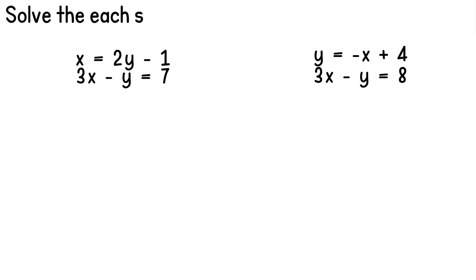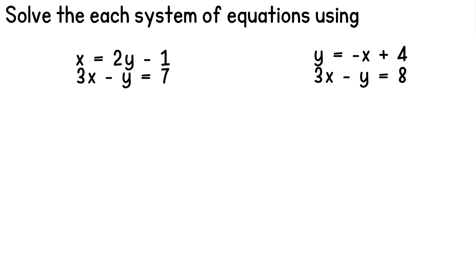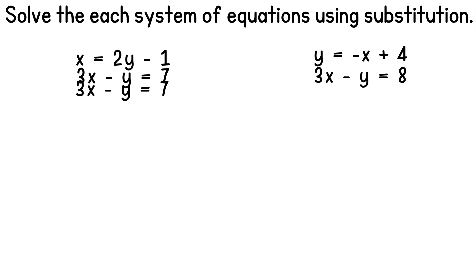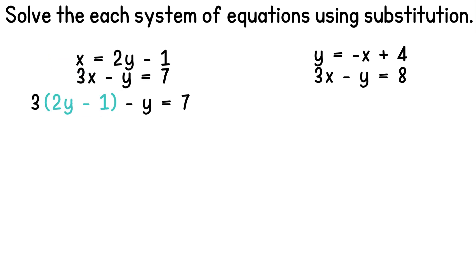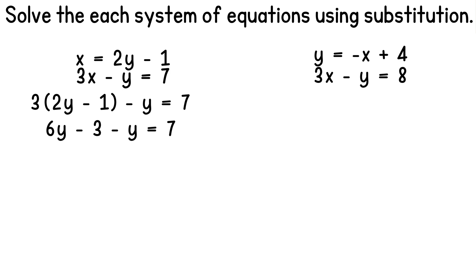We'll solve each system using the substitution method again. We'll start with x equals 2y minus 1 and 3x minus y equals 7. We can see that the first equation already has x isolated. So we'll take our second equation and replace x with what it's equal to, which is 2y minus 1. So we get 3 times the quantity 2y minus 1, minus y equals 7. So we're going to start solving, but we need to simplify first. Let's distribute this 3 to the parentheses that includes 2y and minus 1. Distributing gives us 6y minus 3 minus y equals 7.